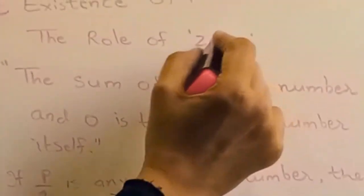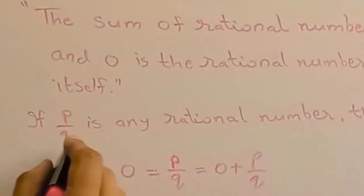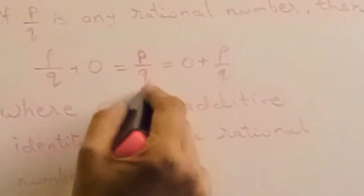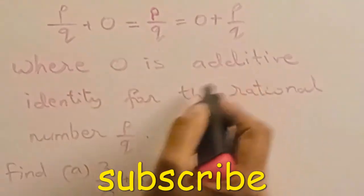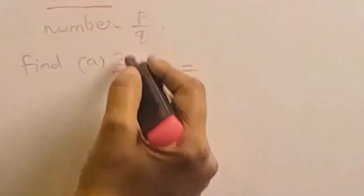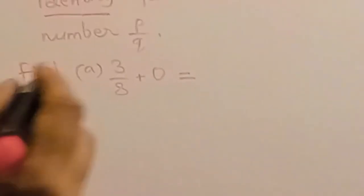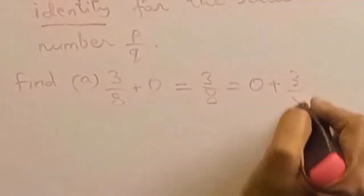Fourth property is existence of additive identity. The role of 0: whenever 0 is added to any rational number, its sum remains the same. If p by q is any rational number, then p by q plus 0 is equal to p by q. You can add 0 in any order, where 0 is the additive identity. For example, if p by q is 3 by 8, this is called the additive identity.